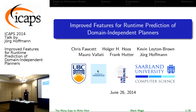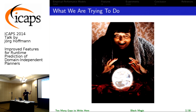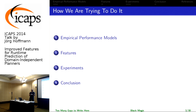I'm not going to read off the title. This here is basically a pretty good picture of what we're trying to do. More specifically, we're trying to predict the runtime that the planner will take on a planning task without even running the planner. It's pretty much a crystal ball prediction kind of problem. We're going to apply a fairly standard approach called empirical performance models, known in SAT for example. It's really all about defining features for prediction.